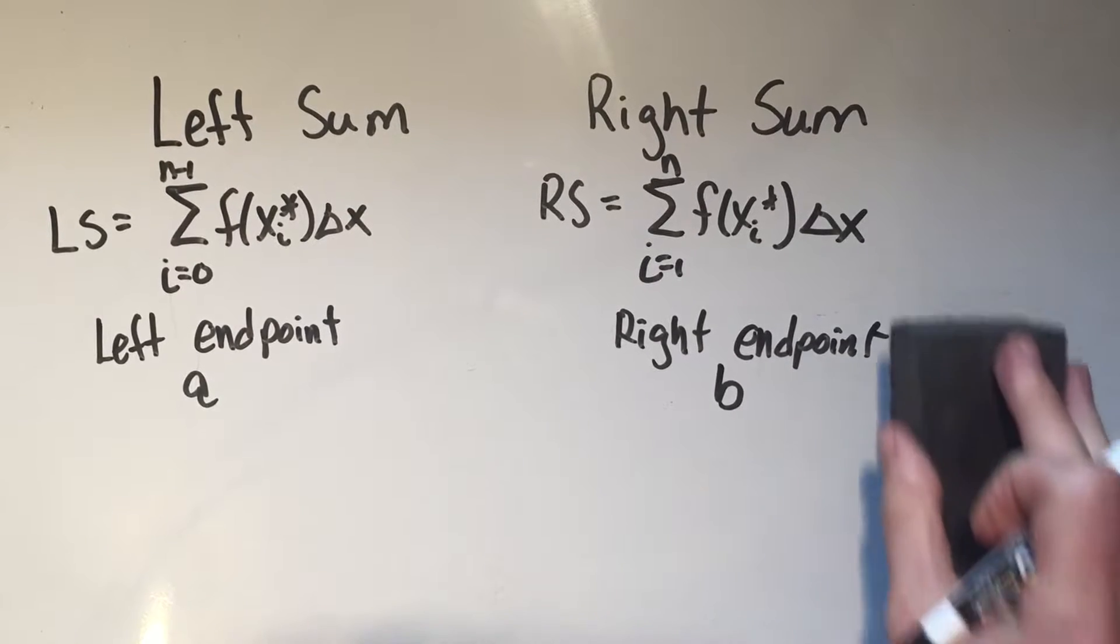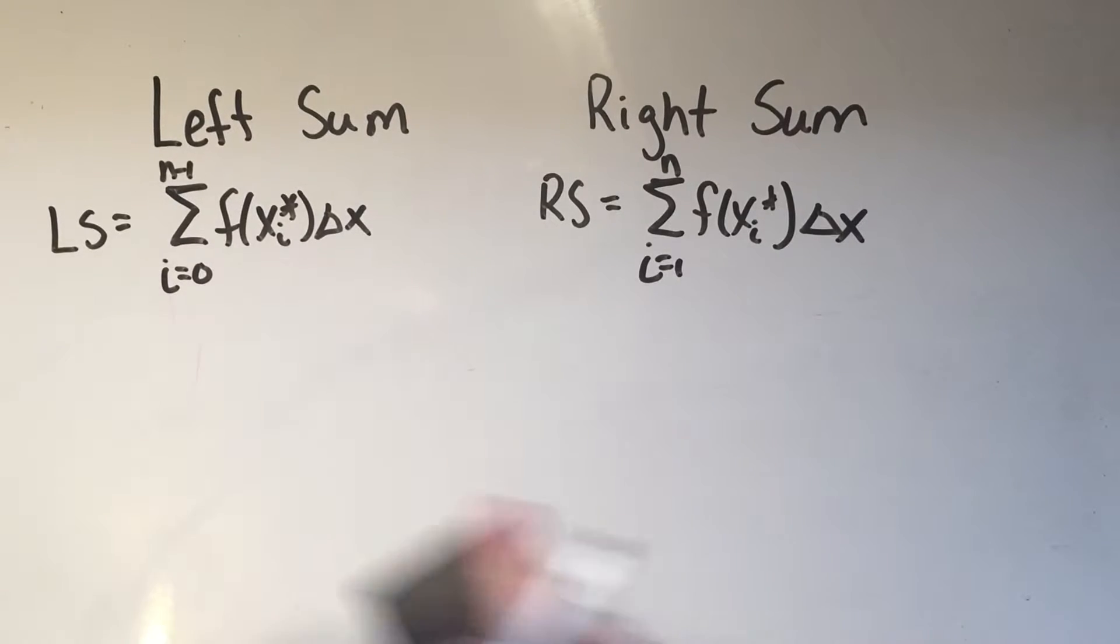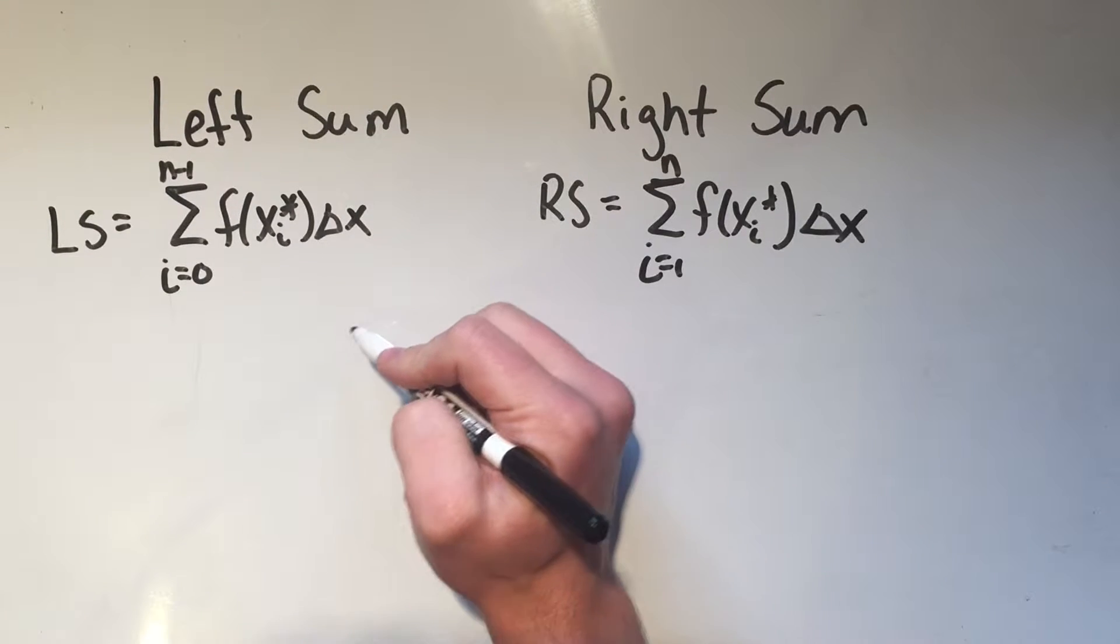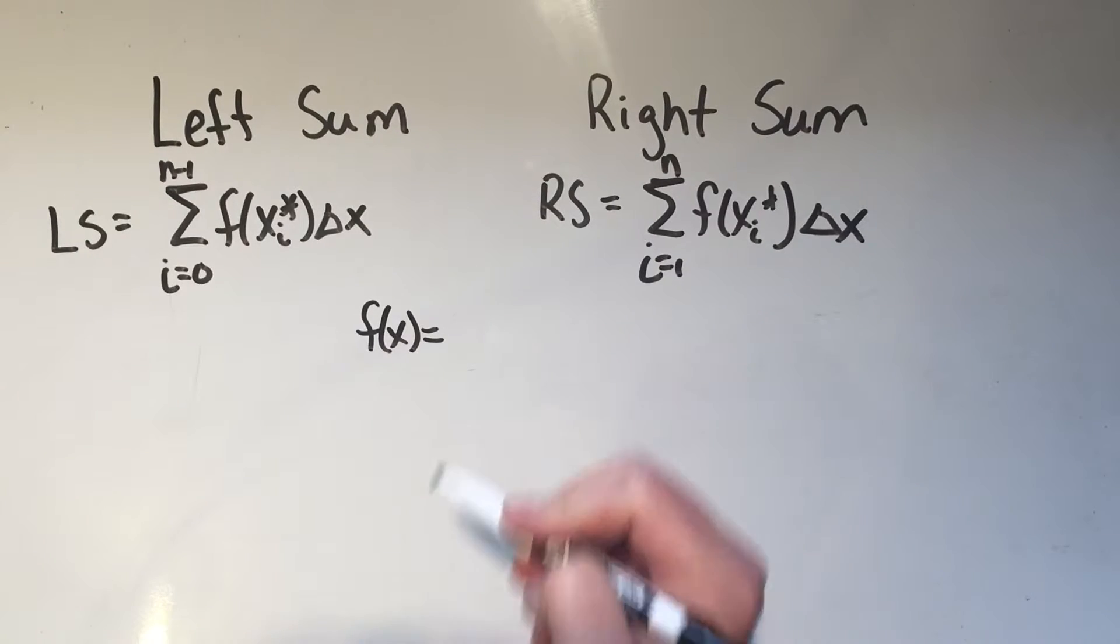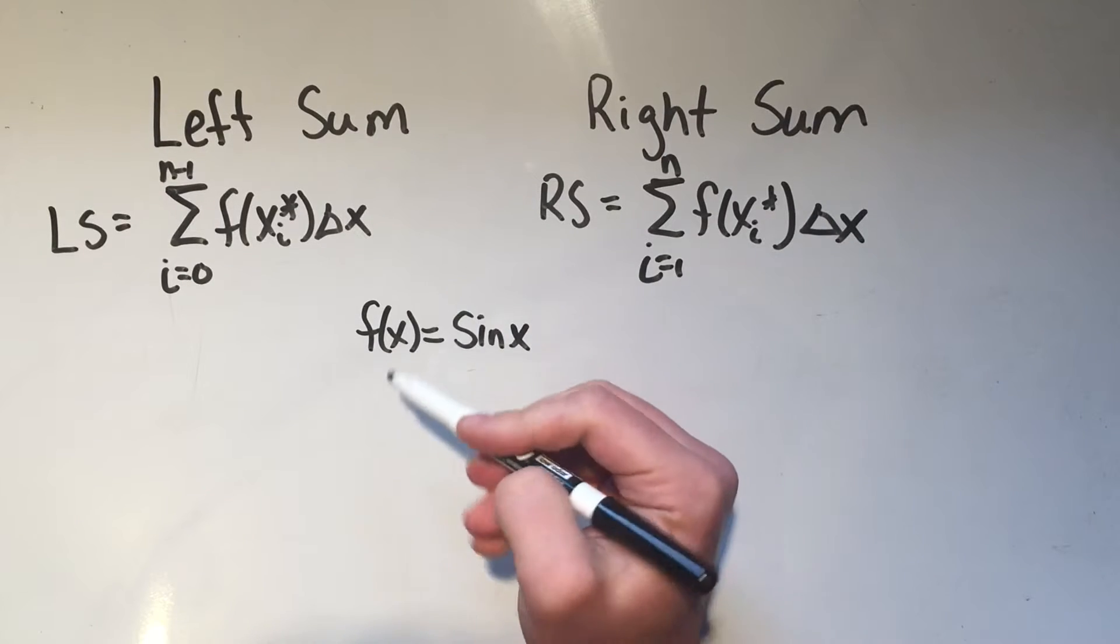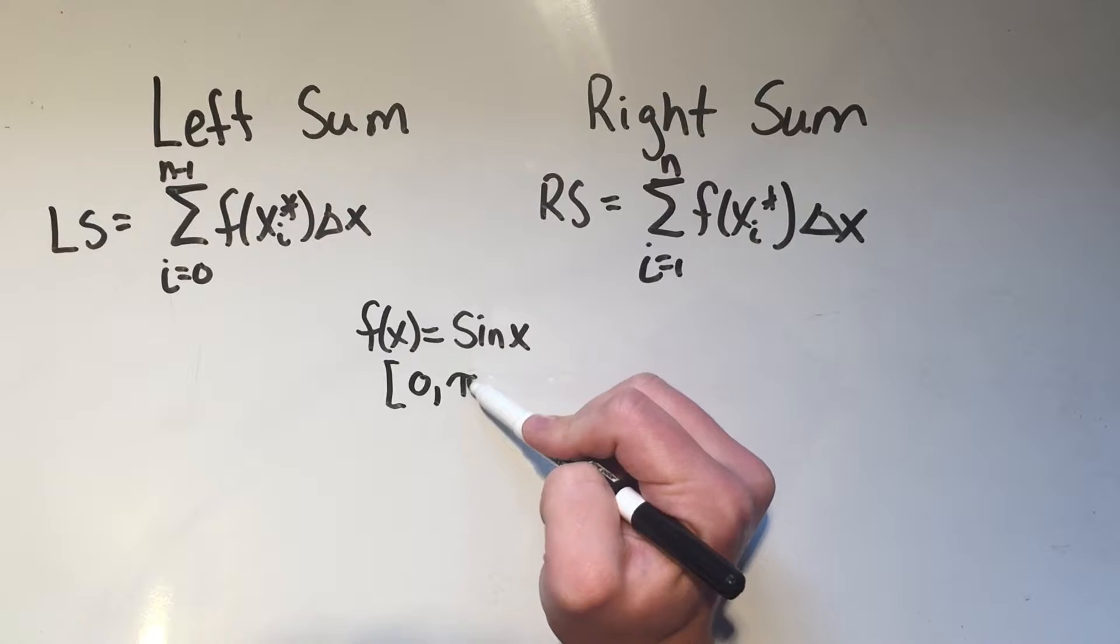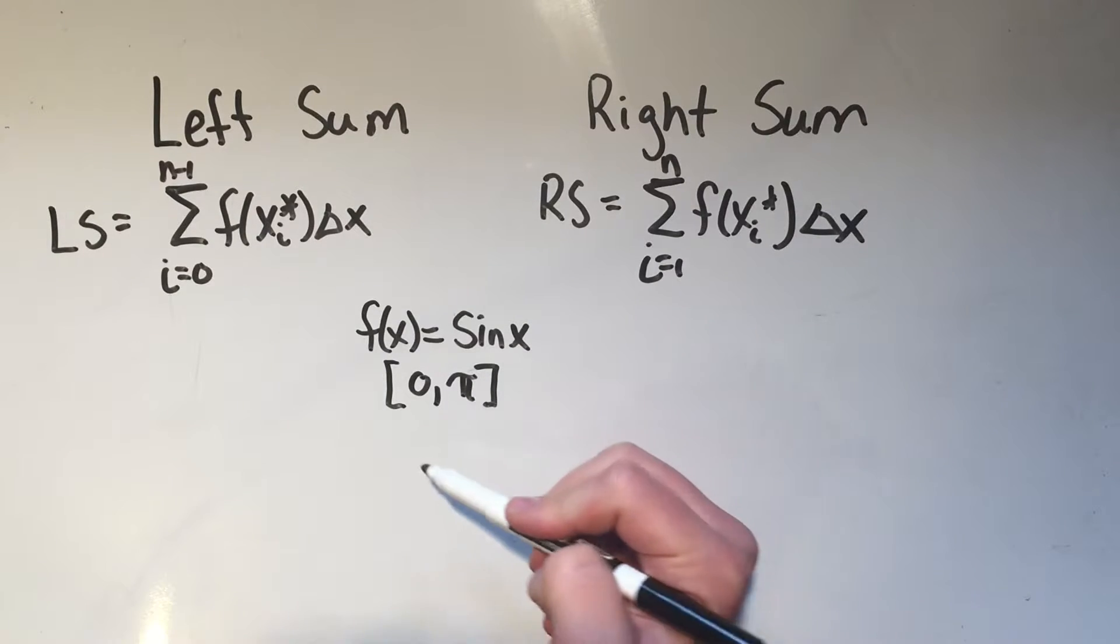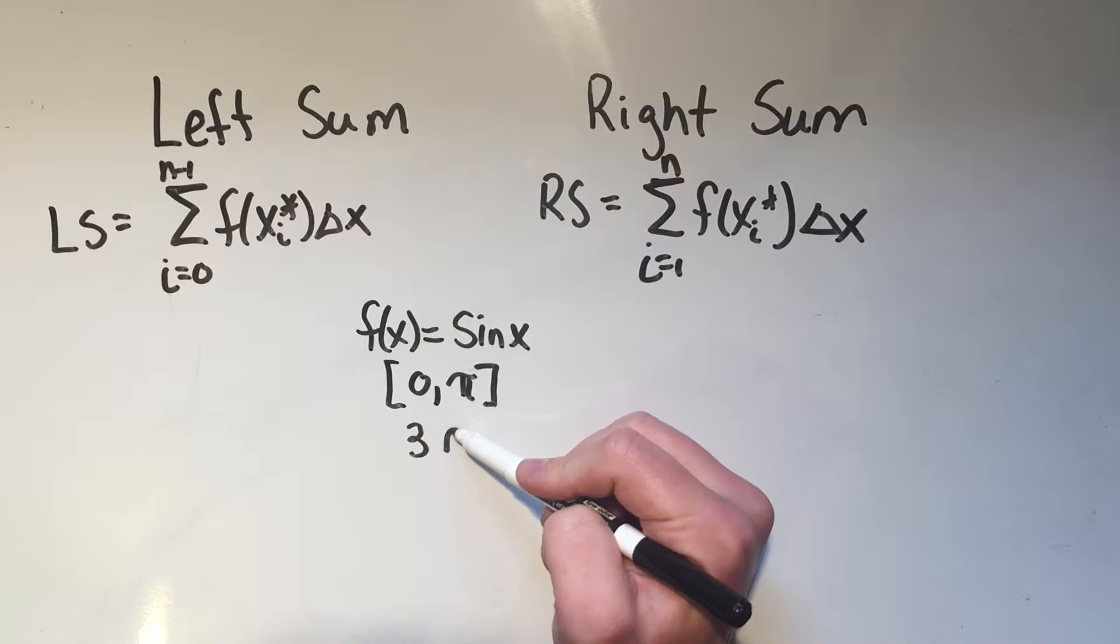Let's look at a concrete example so you can tell what I mean. I'm going to do this Riemann sum both ways, with the left sum and the right sum. And the function we're going to be approximating with these rectangles is sine x. It's going to be on the interval zero to pi, and I'm going to use three rectangles.